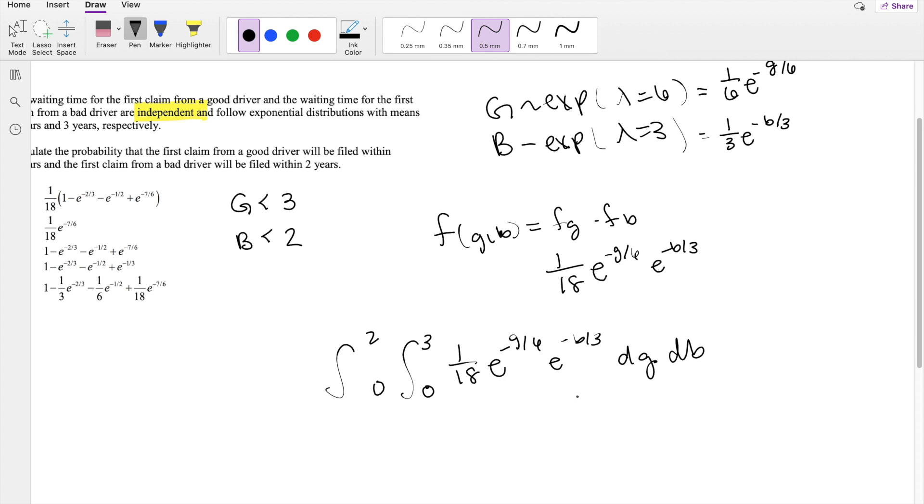If we're integrating with respect to g, then 1 over 18, e to the negative b over 3 is a constant. Taking the antiderivative here, you get this is equal to negative 6, e to the negative g over 6, integrating this from 0 to 3.